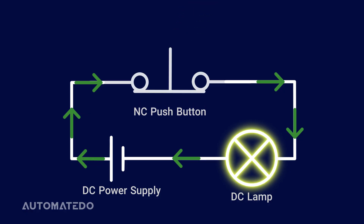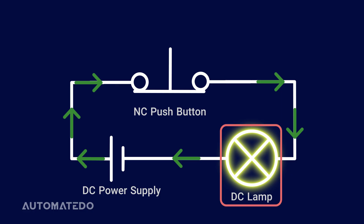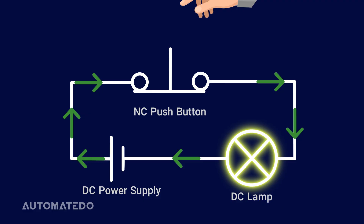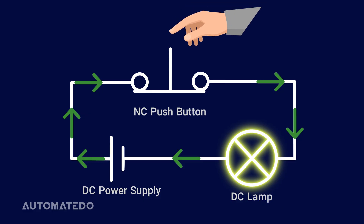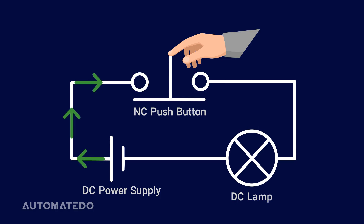The next wiring diagram demonstrates how a normally closed push button can be wired into a circuit to control lamp function. When no pressure is applied, a normally closed push button completes the circuit through its closed contacts and activates the lamp. As soon as the button is engaged, those contacts separate, halting the flow of electricity and cutting the lamp's light.